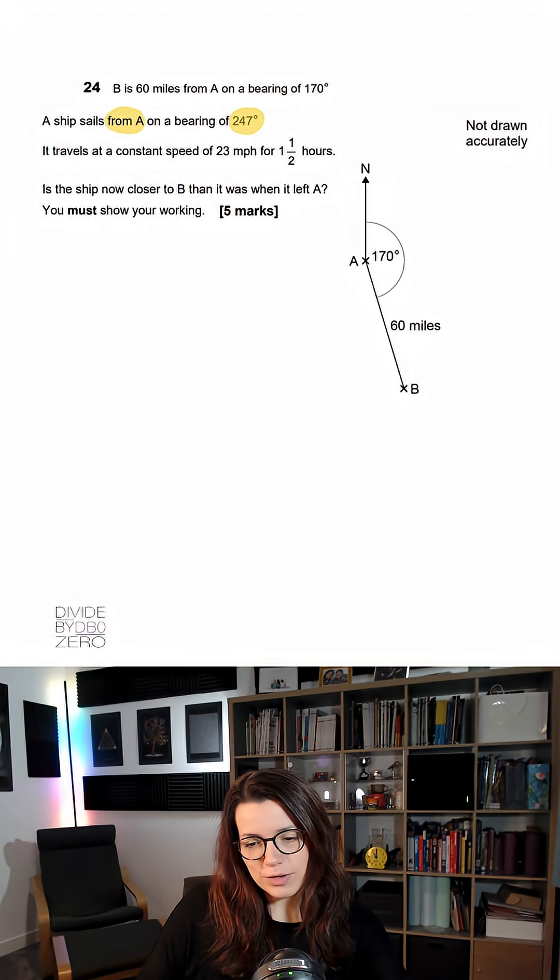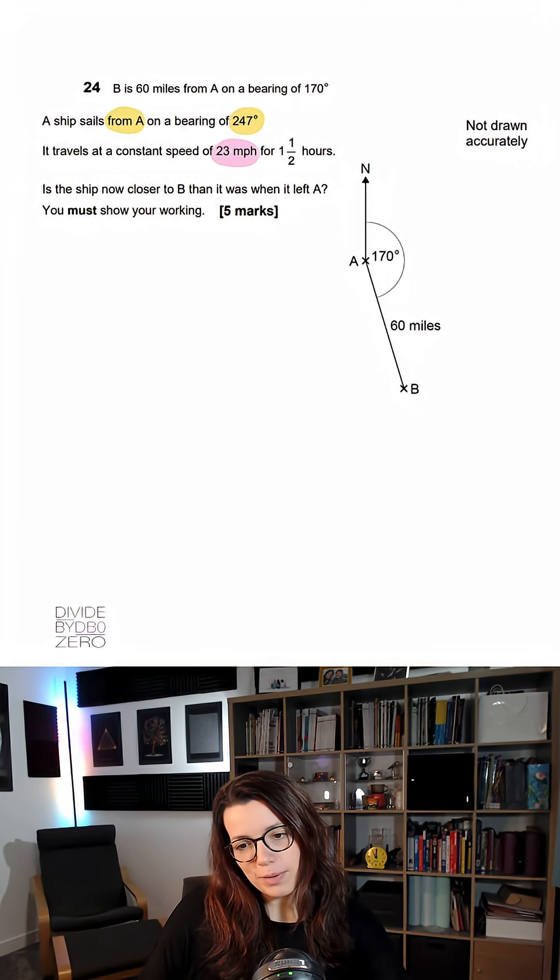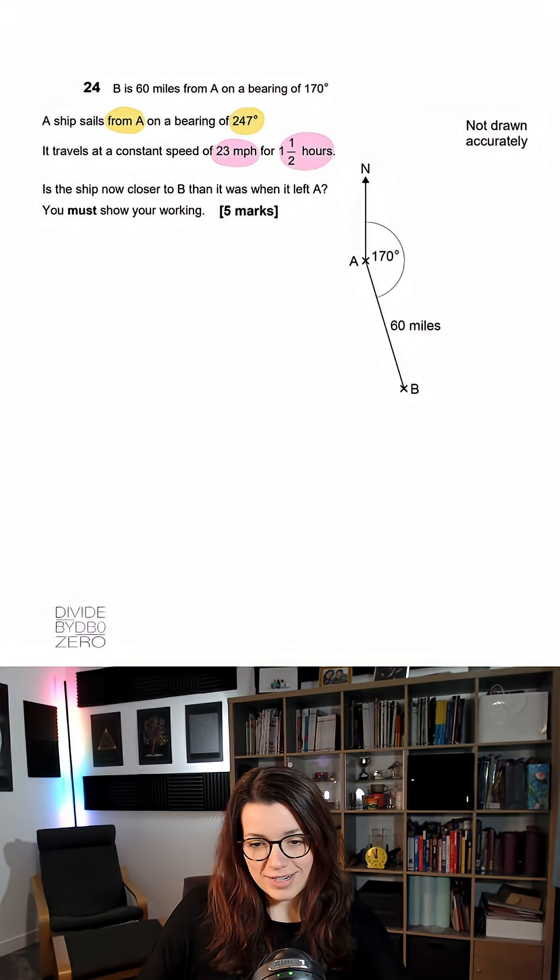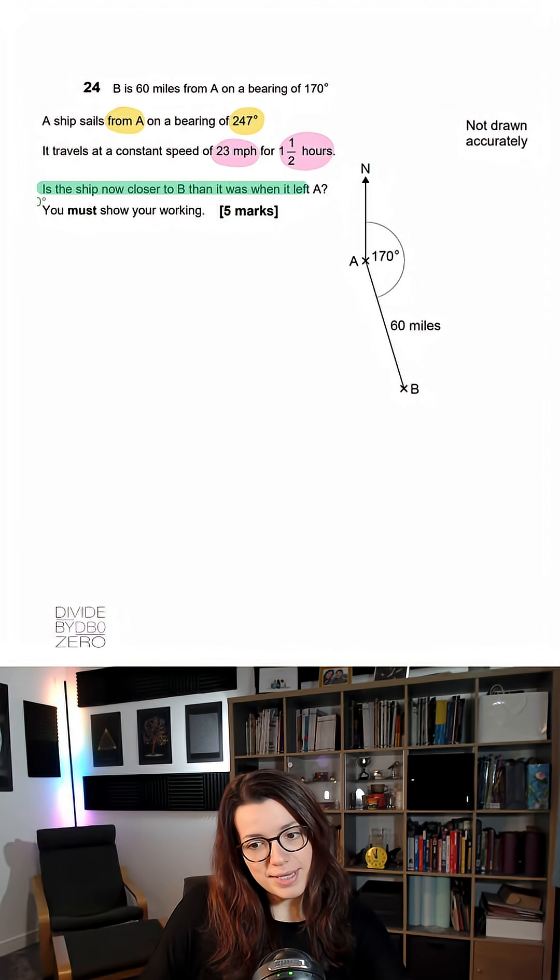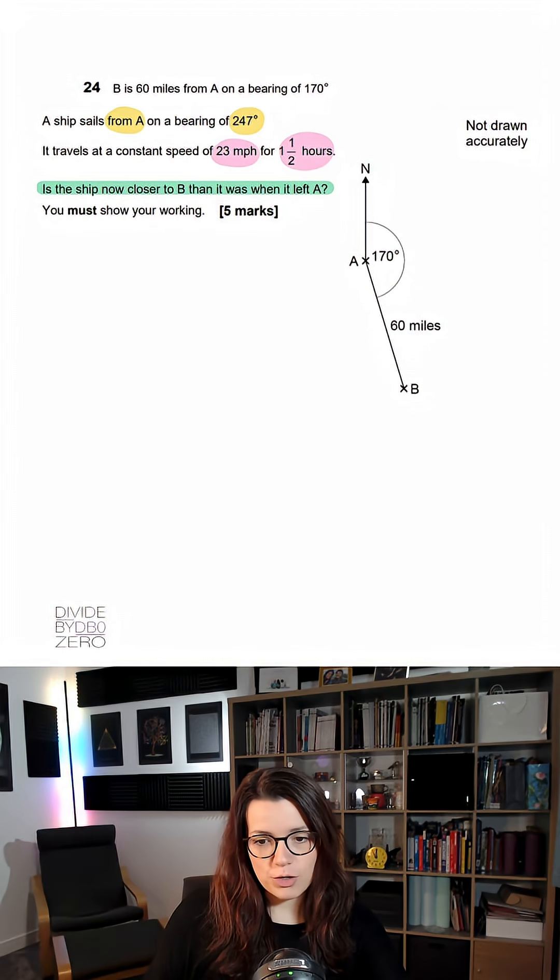The ship sails from A on a bearing of 247 degrees. It travels at a constant speed of 23 miles per hour for one and a half hours. The question is, is the ship now closer to B than it was when it left A? You must show your working.